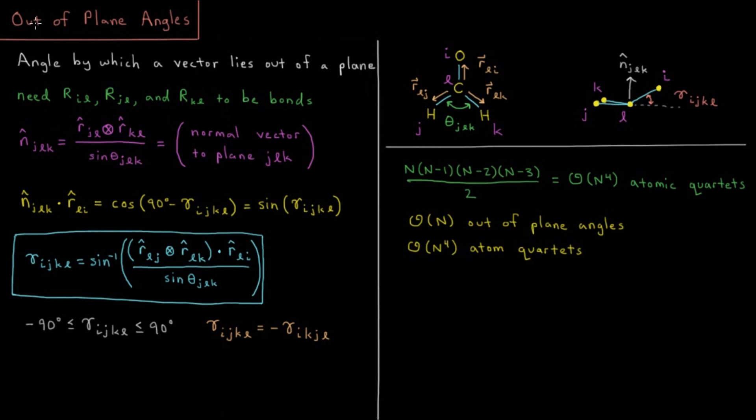This out-of-plane angle we could define as an angle by which a vector lies out of a plane. In the case here, our prototypical example molecule is formaldehyde CH2O. We have a central carbon atom bonded to an oxygen and two hydrogens. This carbon and oxygen are in a double bond, making this an sp2 hybridized carbon. Thus we expect the geometry of this molecule to be pretty much planar with bond angles of approximately 120 degrees and all four atoms lying approximately in the same plane.